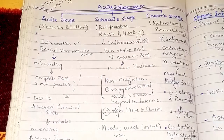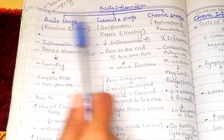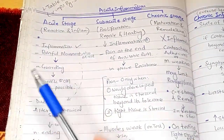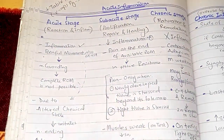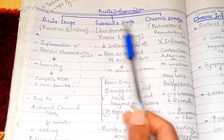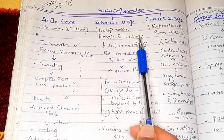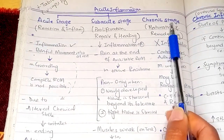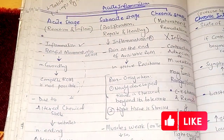The stages of acute inflammation are the acute stage, subacute stage, and chronic stage. The acute stage is also known as the reaction or inflammatory stage. The subacute stage is also known as proliferation, repair, and healing, because healing occurs during this stage. The chronic stage involves maturation and remodeling.